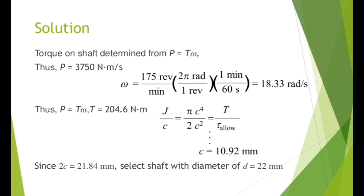Thus T = 204.6 N·m. Using j/c = (pi*c^4/2) / c = pi*c^3/2 = T / allowable stress, solving gives c = 10.92 mm. Since d = 2c = 21.84 mm, the required diameter is d = 22 mm.